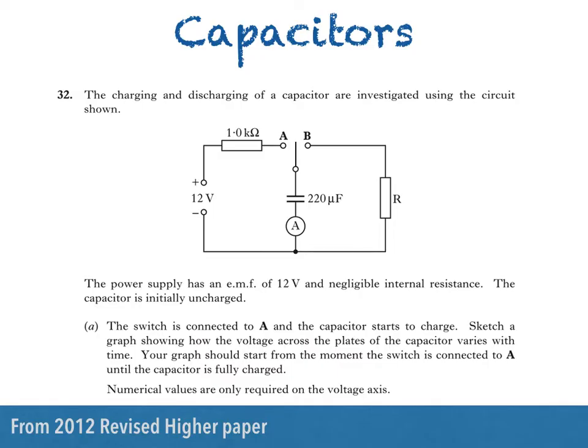Part A says the switch is connected to A, like so, and the capacitor starts to charge. We're asked to sketch a graph showing how the voltage across the plates of the capacitor varies with time. Your graph should start from the moment the switch is connected to A until the capacitor is fully charged. Numerical values are only required on the voltage axis.